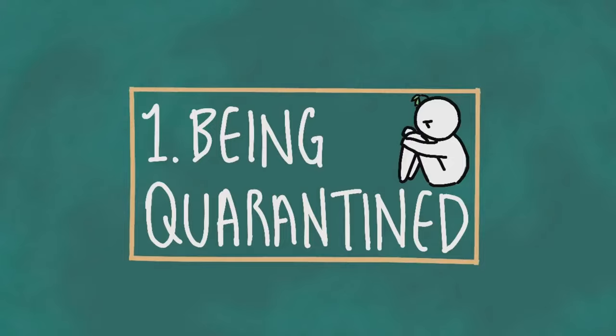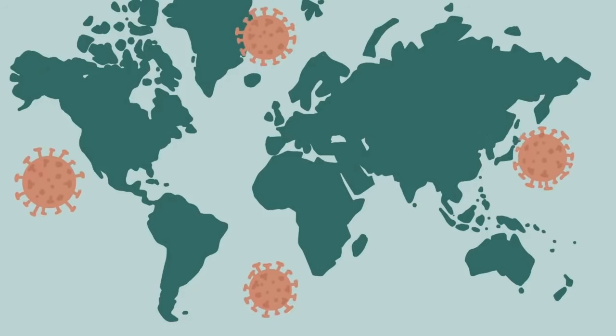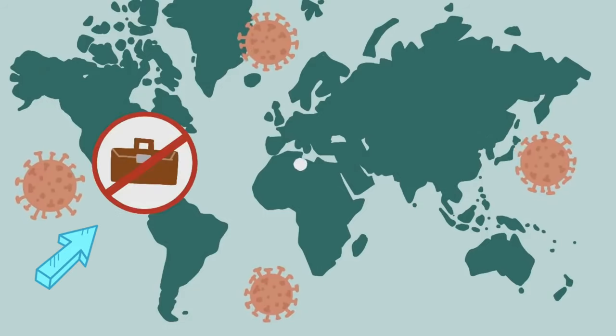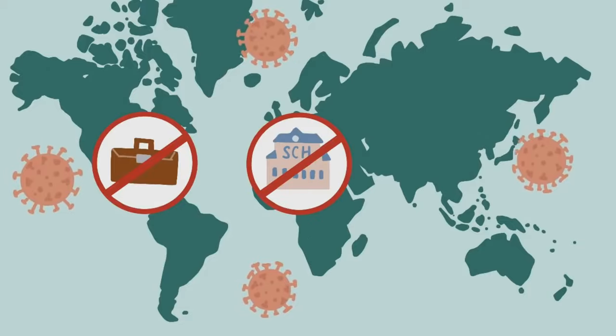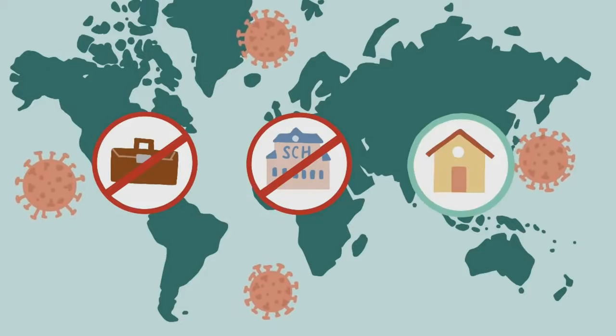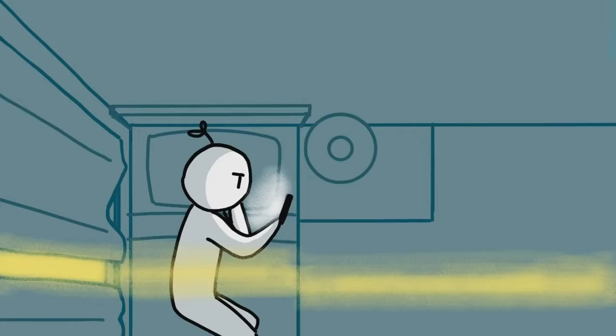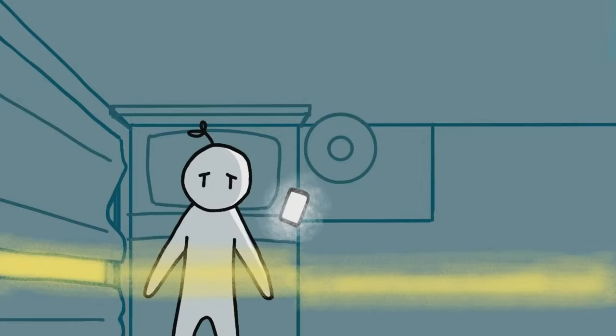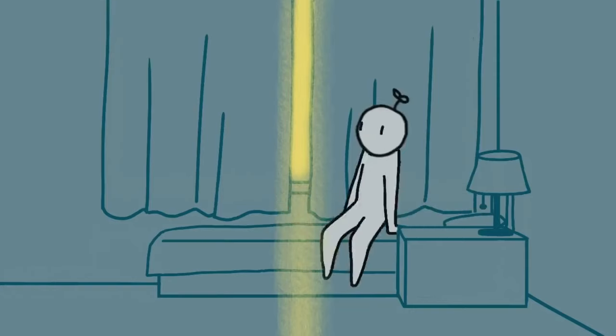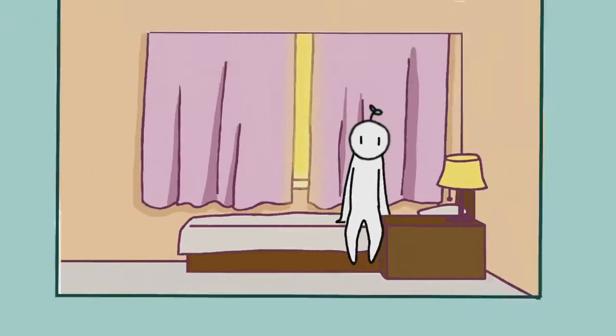Number one: being quarantined. In light of the coronavirus, many countries have suspended work and classes, advising everyone to stay at home for their own safety. Self-isolation may be hard to adjust to at first, but instead of thinking 'I'm stuck at home with nothing to do,' try shifting your mindset to something more positive like 'I can stay safe in my own home and spend time with my family.'